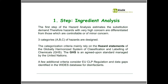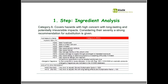There are also data gaps which are considered via the VIDAS database, which I will refer to shortly. Category A covers hazards of high concern in our understanding — those with long-lasting and potentially irreversible impacts. Considering their severity, we strongly recommend substitution if an ingredient carries such a hazard phrase. For instance, properties that cause genetic defects or cancer are covered by Category A.